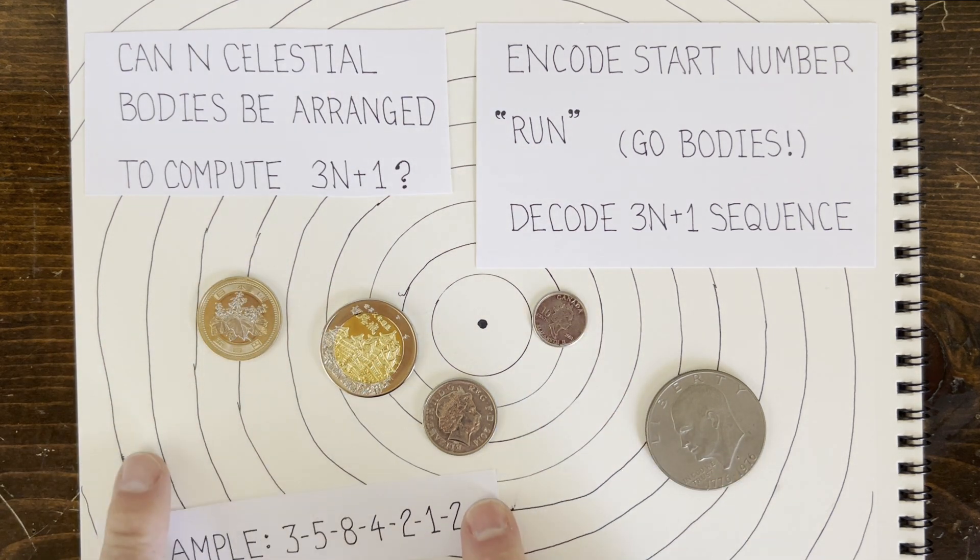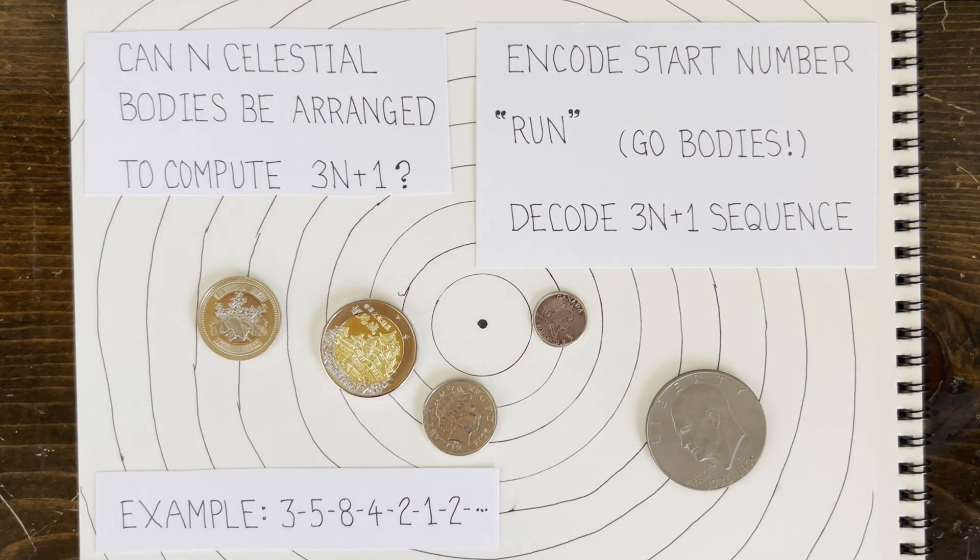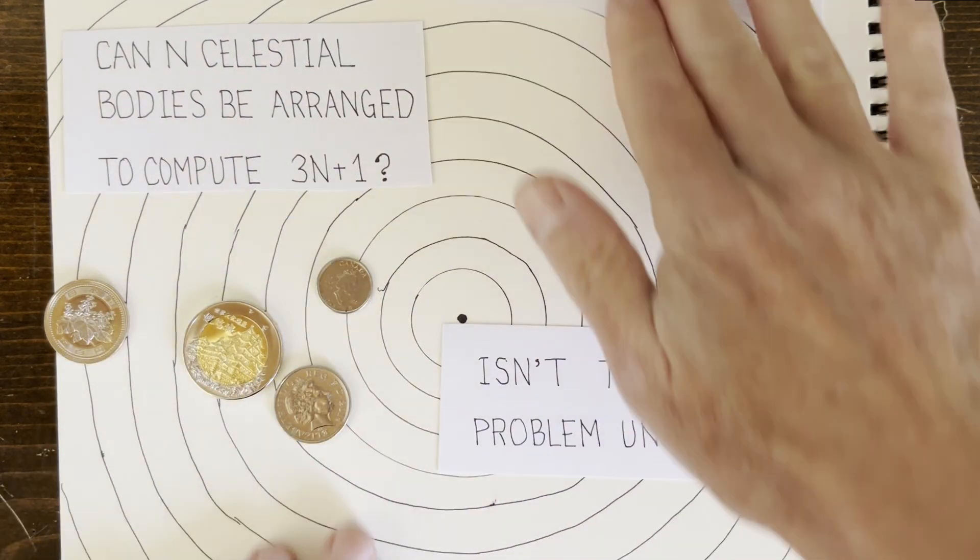So this is all made up, but could it be done? Alright, everybody knows the 3-body problem is unsolvable. Now, what does that mean?